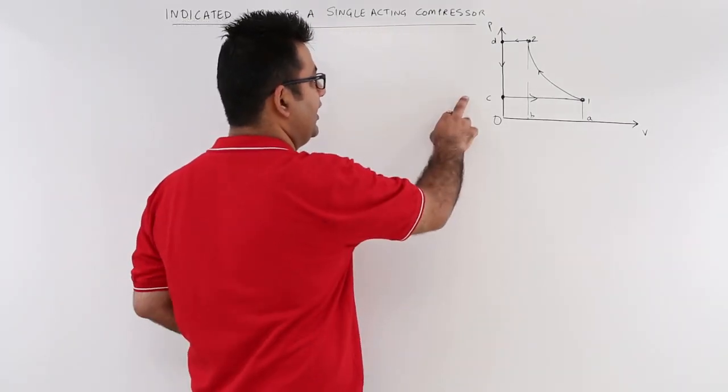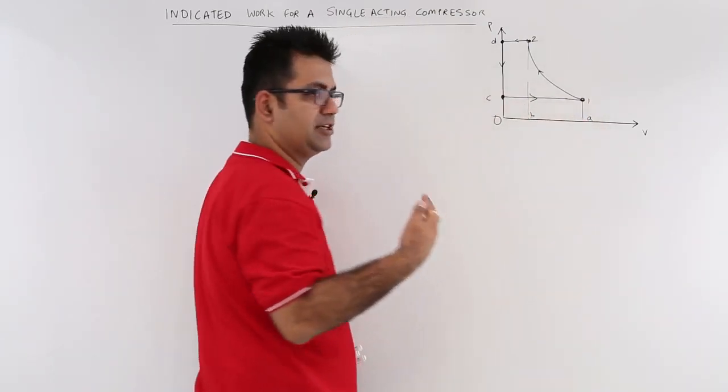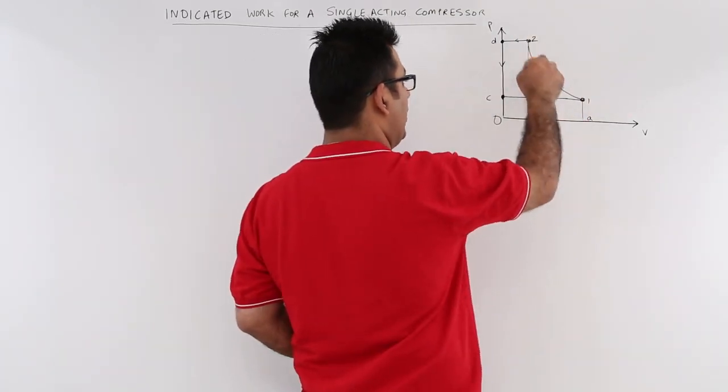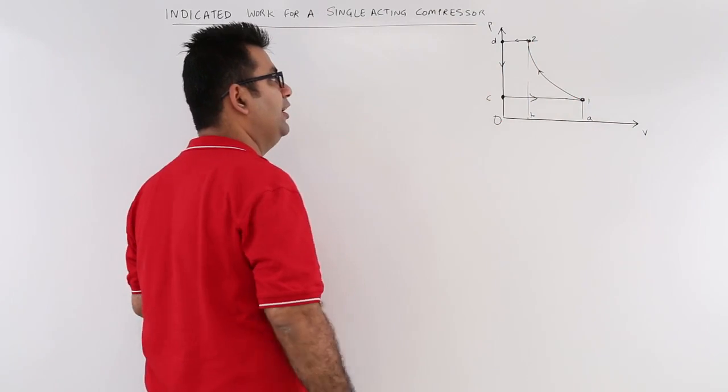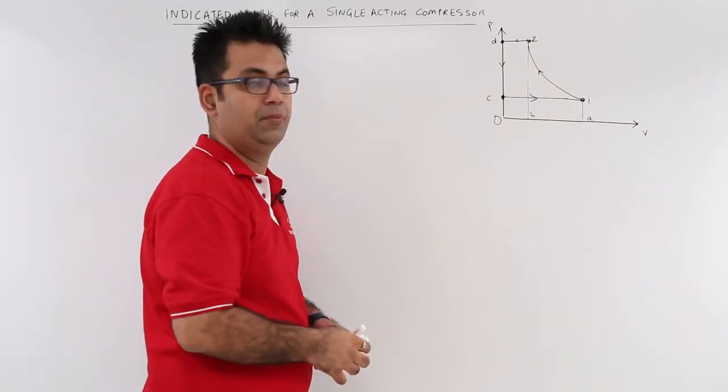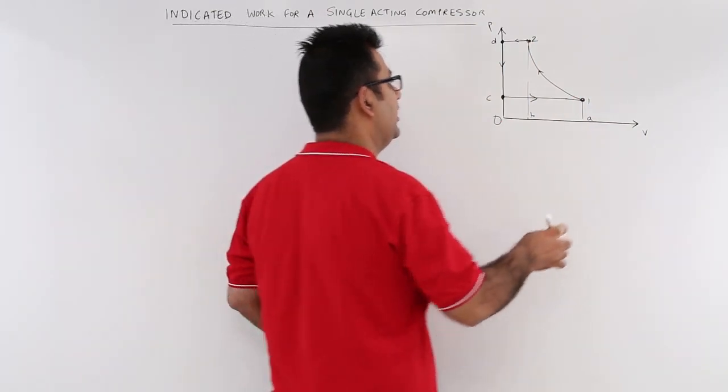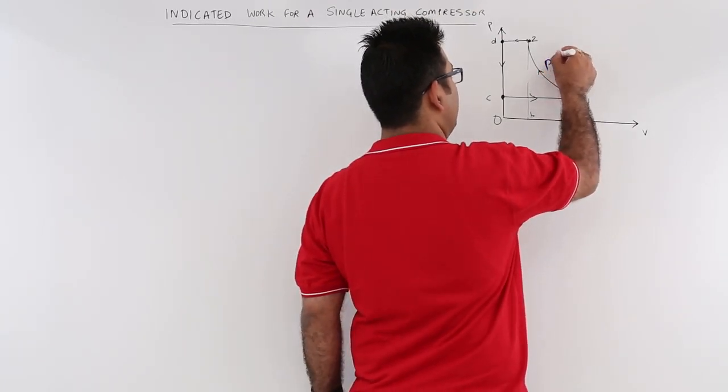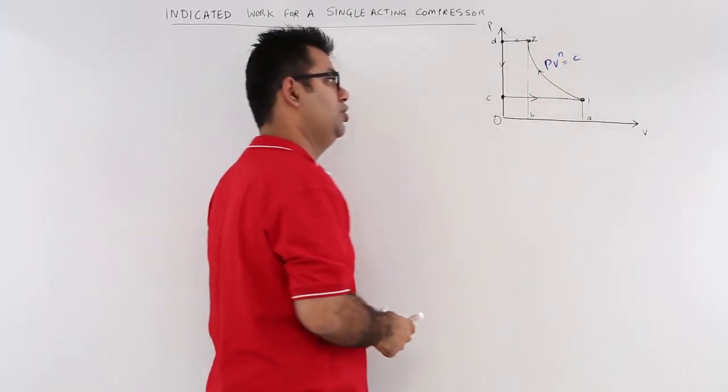We will further that discussion and draw the same PV plot again. You have line C1 indicating the suction stroke, then line 12 and 2D as your delivery, and 12 as your compression. Now this is the polytropic compression, so you have PV to the power n equals constant.